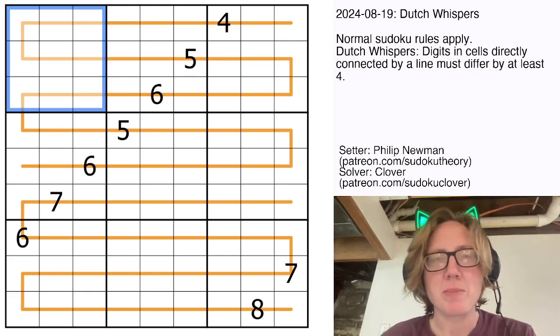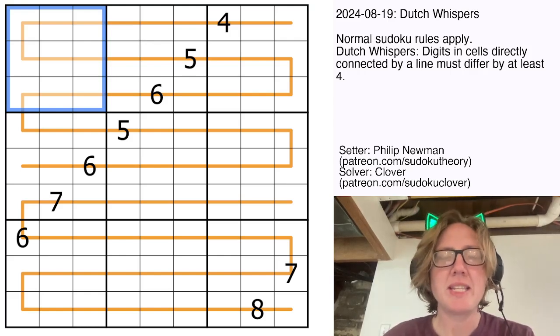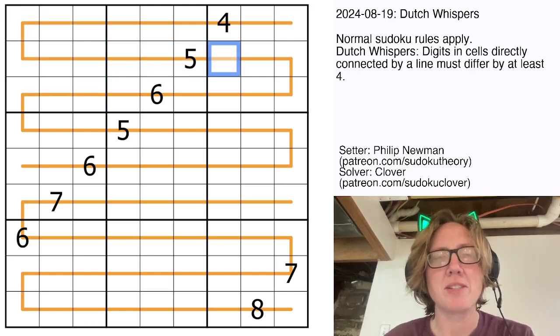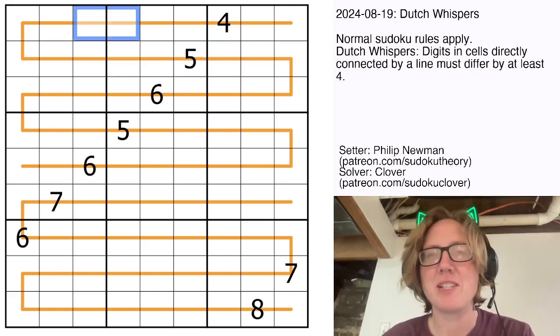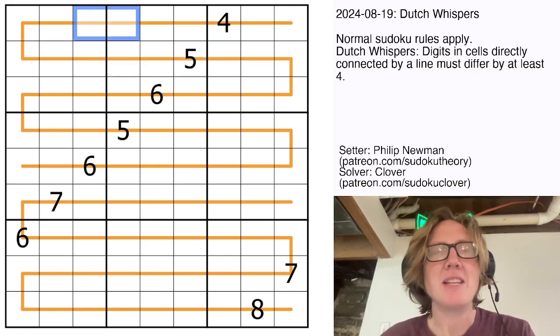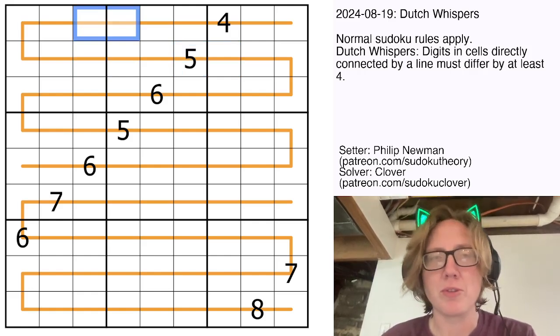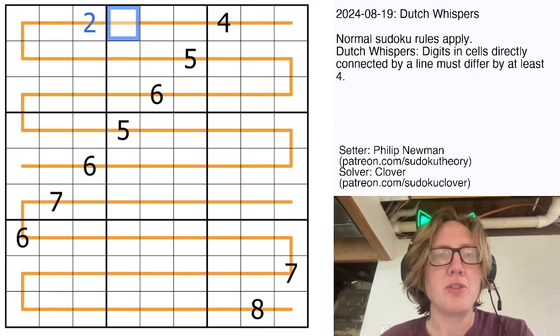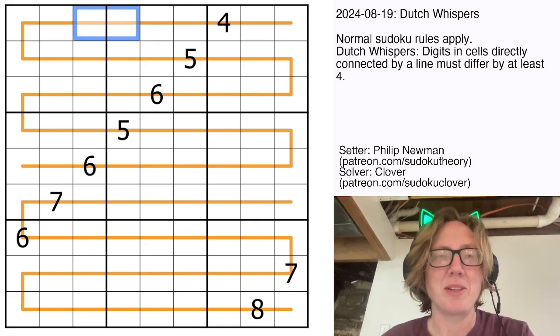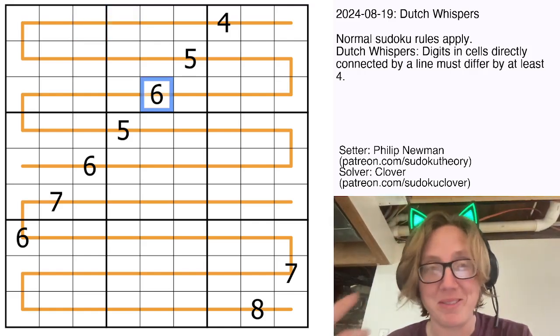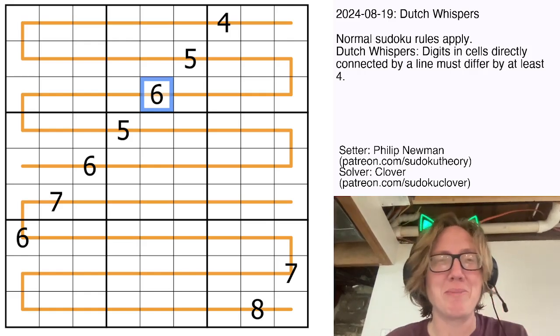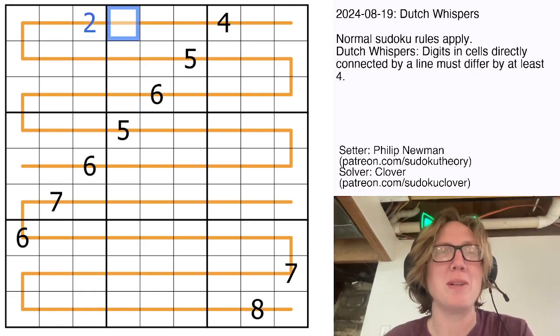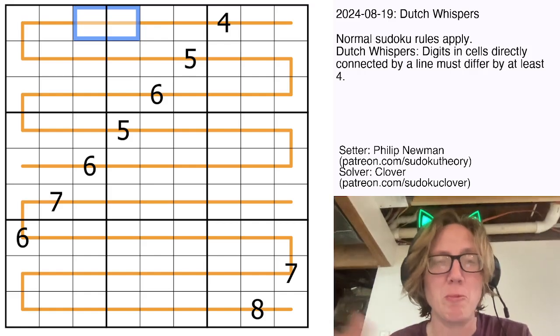And then we also have Dutch Whispers. The Dutch Whispers rule says that digits that are next to each other connected by an orange line, for instance, this pair of digits, or this pair of digits, have to have a difference of 4 or more. So we could put 2 and 7 there, because the difference there is 5. We could put 2 and 6 there if we wanted to, assuming there wasn't a 6 in that box, which there is. Or alternatively, we could put 3 and 9, but we couldn't put 2 and 3, because those are too close together, their difference is only 1.